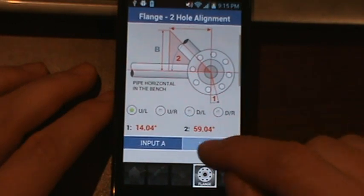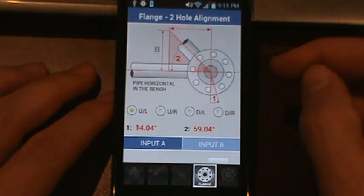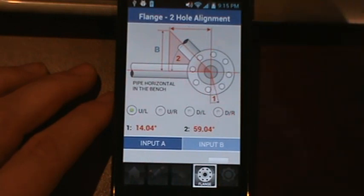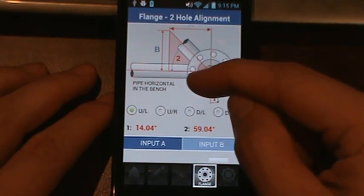And it'll show you right here. The two value is 59 degrees. So basically your pipe in order to go from a field position to the horizontal position had to roll 59 degrees.